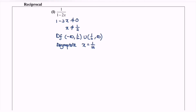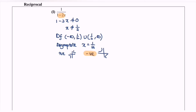Step number three, we have to determine the direction. So if the coefficient of x is positive, our graph will be towards the right. If the coefficient is negative, our graph will be towards the left. So for this case, it is negative, so towards the left.